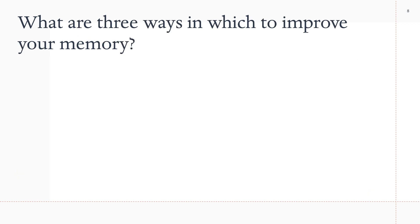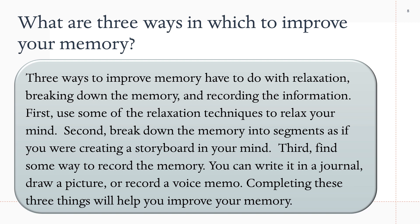What are three ways to improve your memory? Three ways to improve memory have to do with relaxation, breaking down the memory, and recording the information. First, use some of the relaxation techniques to relax your mind. Second, break down the memory into segments, as if you were creating a storyboard in your mind. Third, find some way to record the memory — you can write it in a journal, draw a picture, or record a voice memo. Completing these three things will help you improve your memory.